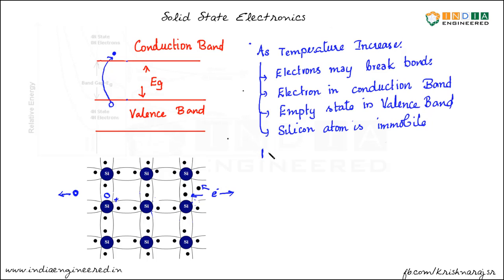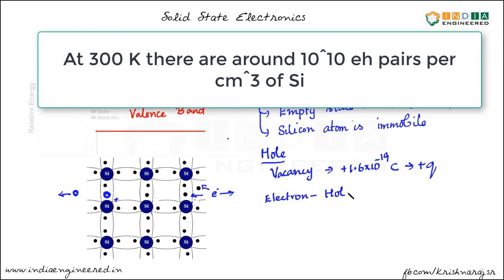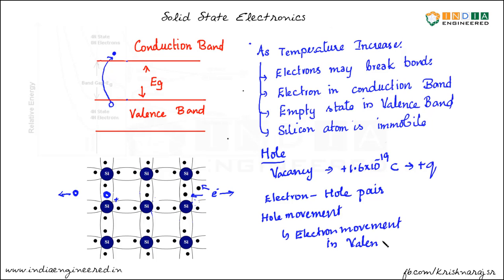So we will introduce the concept of hole. We can call this vacancy or empty state a hole. The charge of a hole is +1.6 × 10⁻¹⁹ C. We can see how the charge moves along one direction when the electron was moving in the opposite direction in the bonds. So as temperature increases, we generate an electron-hole pair — an electron which is ready to conduct, and a hole. Hole movement is nothing but electron movement in the opposite direction, or electron movement in the valence band in the opposite direction.